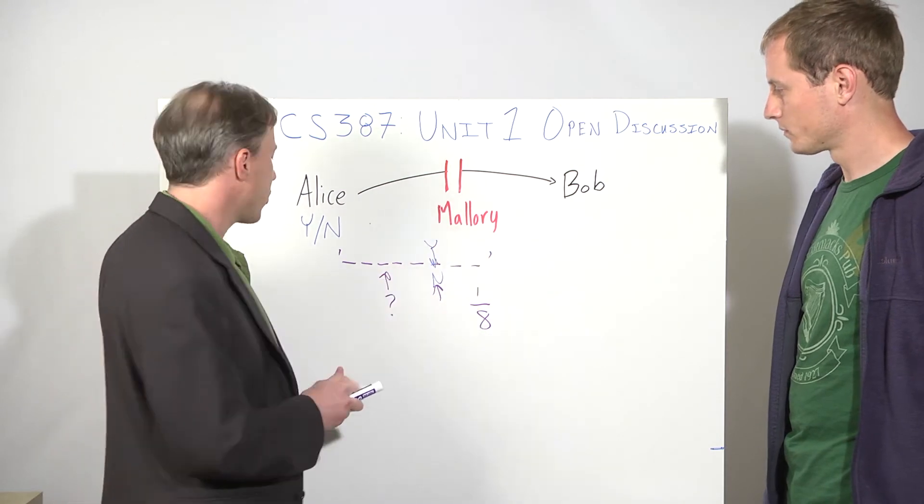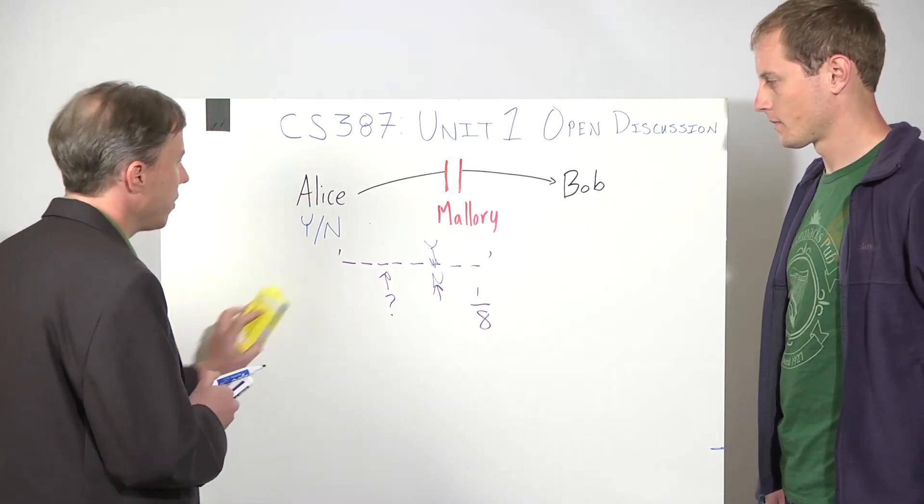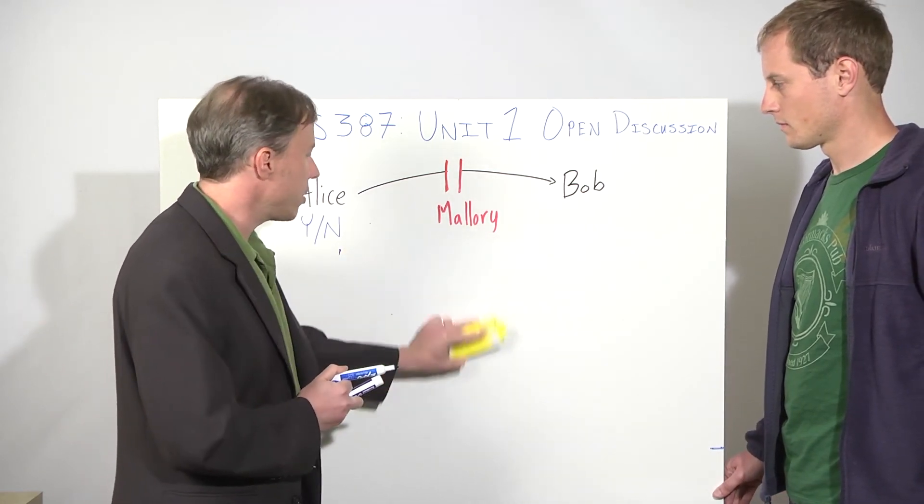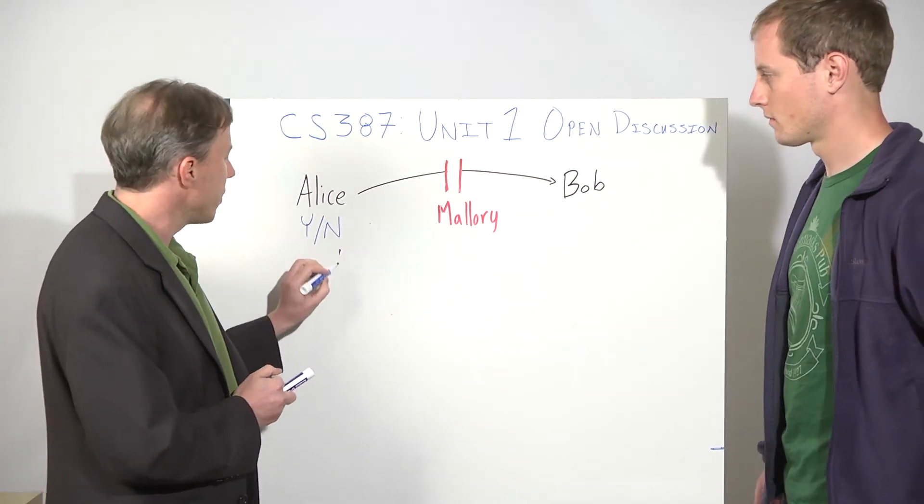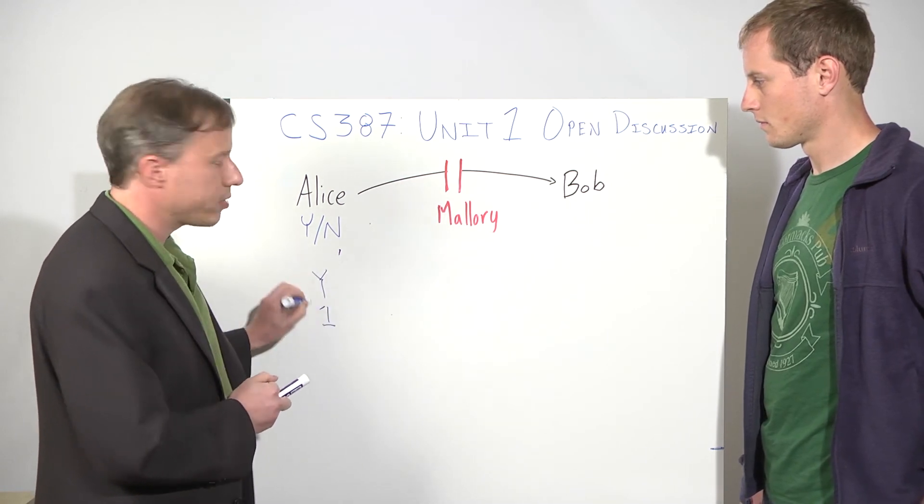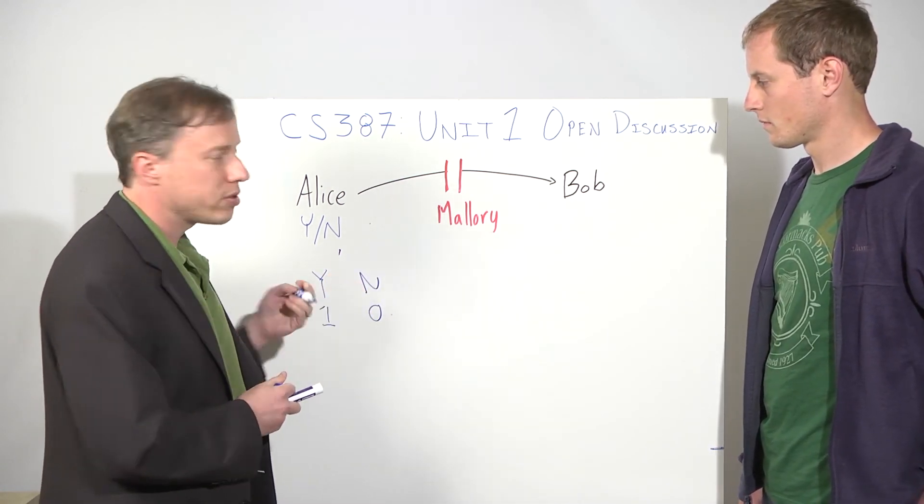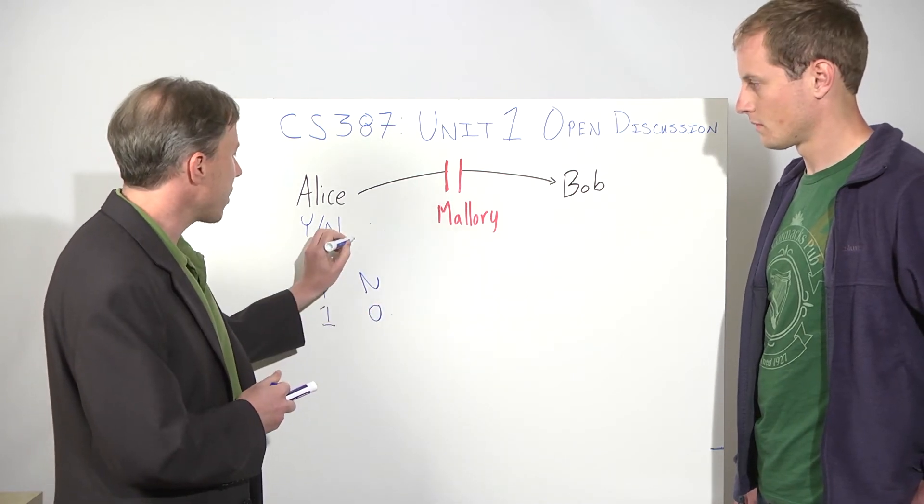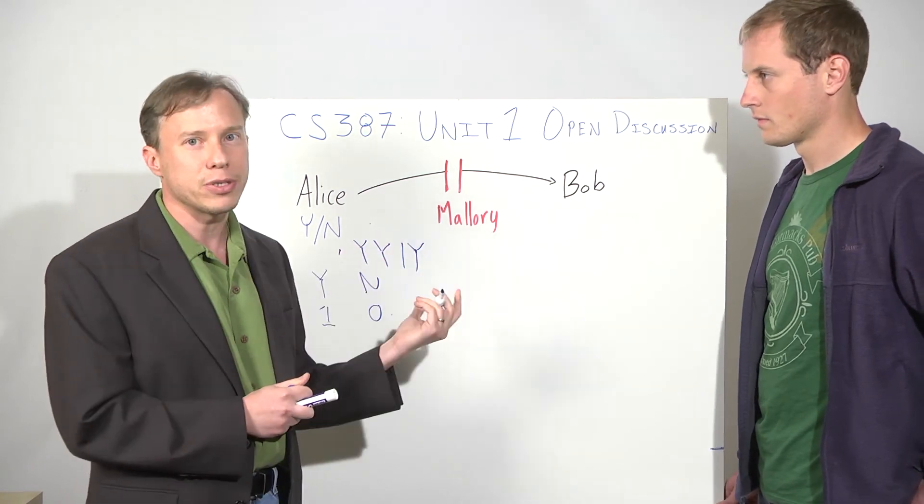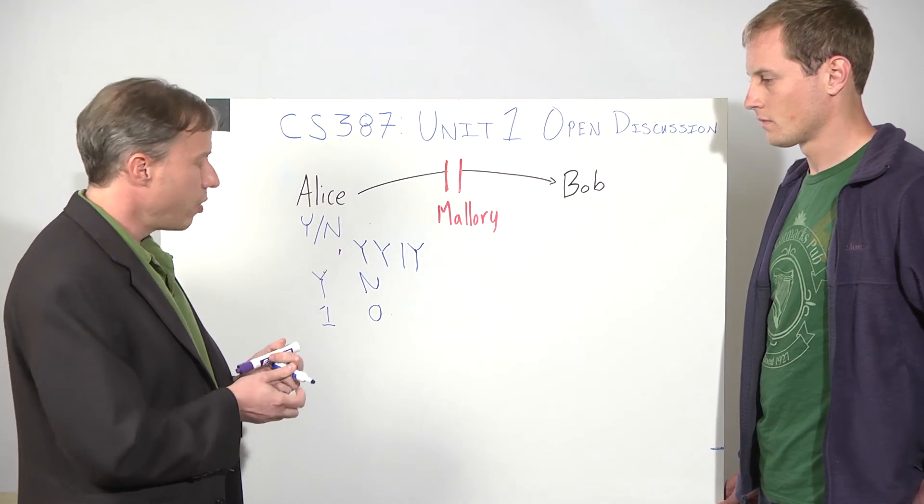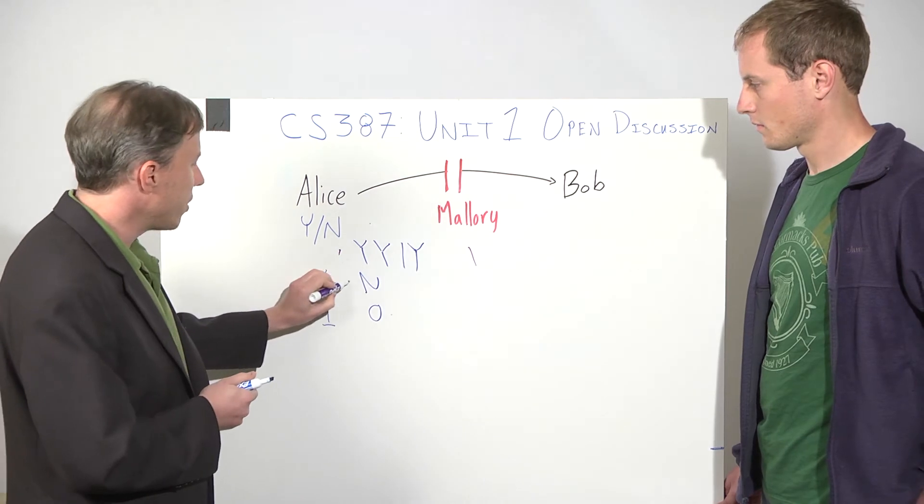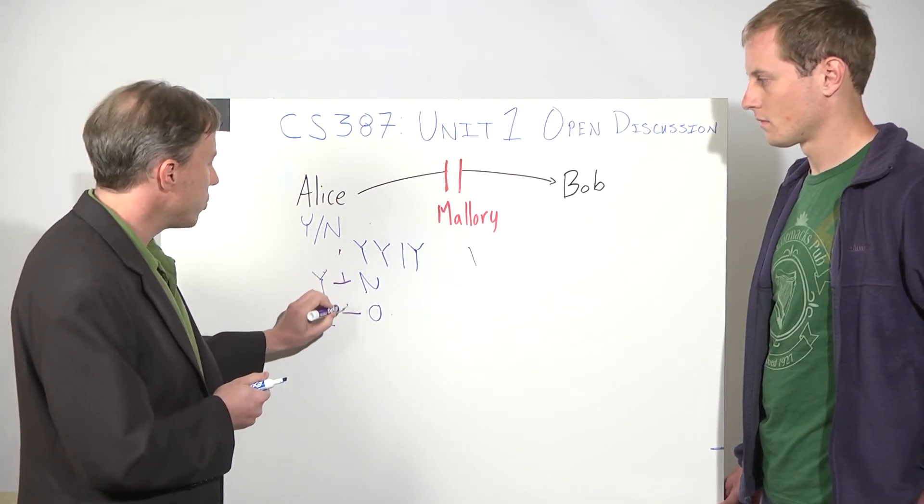We could get a similar property with a shorter message, if instead of having only one of them depend on the choice, we make a short message where each of the characters in the message depends on the yes or no value. But Alice randomly picks either to send a y or a 1 if the answer is yes, or to send an n or a 0. So she's going to randomly pick for each position whether to send a y or a 1.